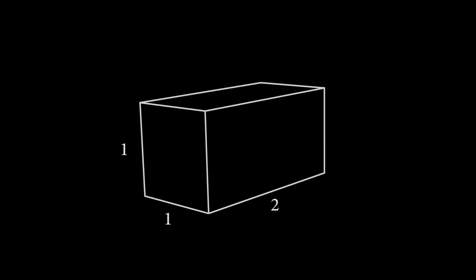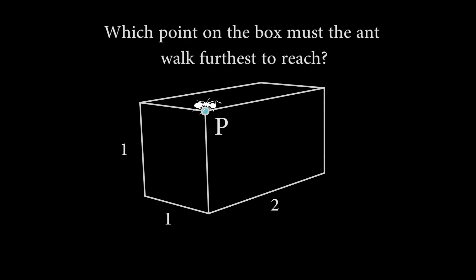Imagine that you have a 1 by 1 by 2 box. Choose one of the vertices and label this point P. Now suppose that there is an ant standing at P. Which point on the surface of the box will the ant need to travel the longest distance to reach? The ant can only travel along the surface of the box.